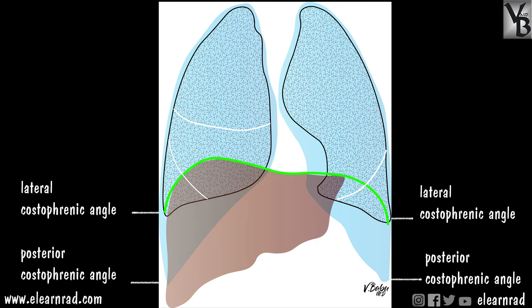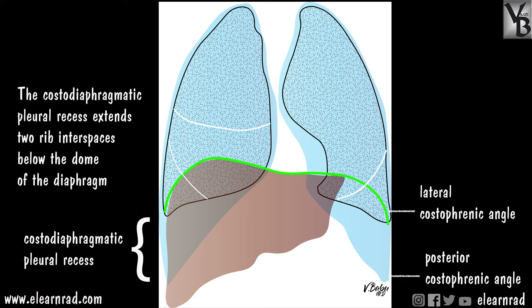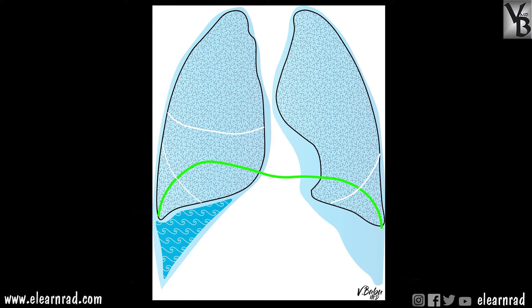In a frontal chest radiograph, the costal phrenic angles visualized represent the lateral costal phrenic angles. The costodiaphragmatic pleural recess extends two more rib interspaces caudally, which is obscured by the diaphragm in a frontal x-ray projection.